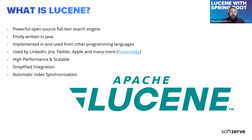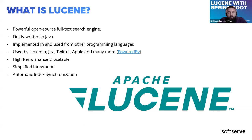Lucene is a Java-based search library that provides powerful full-text indexing and searching capabilities. It was originally written in Java, but nowadays it's implemented and used in many other languages. It offers fine-grained control over indexing and searching processes. Lucene is widely used as a standalone library or as a foundation for building search functionalities in custom applications. It's used by LinkedIn, Jira, Twitter, Apple, and many more. You can check the 'Powered By' link to see how many companies and projects are using it. Lucene is highly scalable and performs very well with large volumes of data.